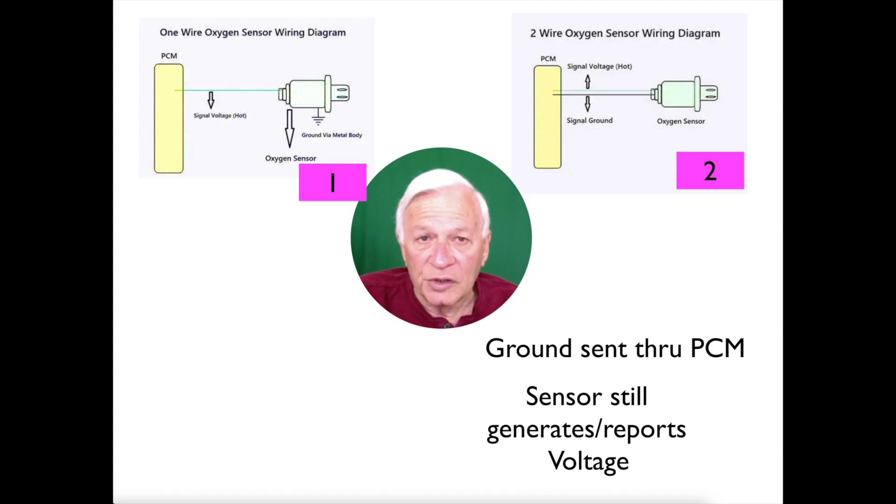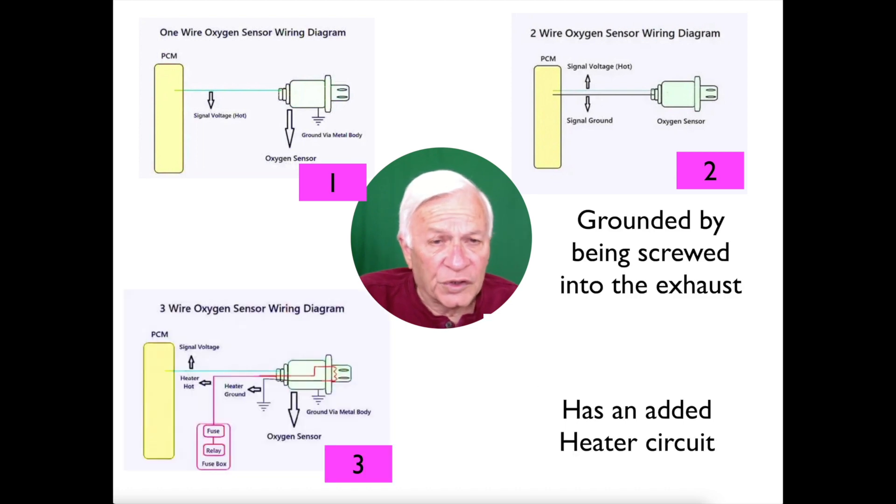The sensor still generates and reports voltage, but the ground is the difference. In this third type of sensor, it is grounded by being screwed into the exhaust but it has an added heater circuit.